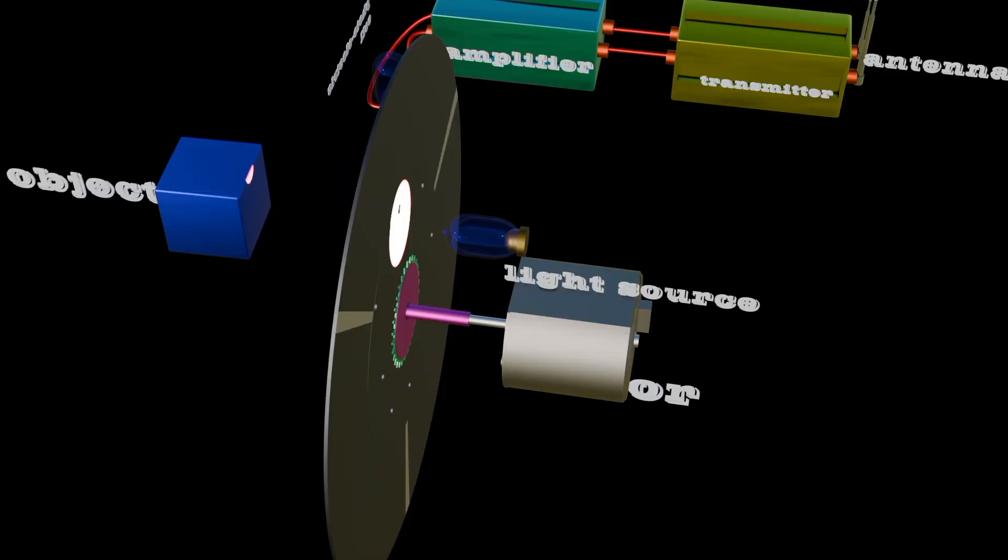It all began in 1800s when mechanical TV was invented, precisely the Nipkow disk in 1884. This was spinning disk with holes to project images.